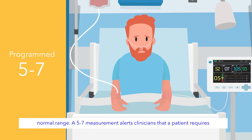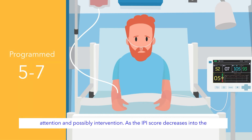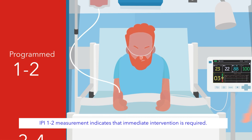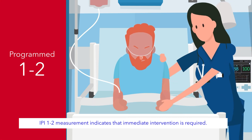A 5 to 7 measurement alerts clinicians that a patient requires attention and possibly intervention. As the IPI score decreases into the 3 to 4 range, it alerts the clinician that intervention may be necessary, and an IPI score of 1 to 2 indicates that immediate intervention is required.